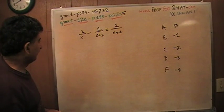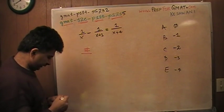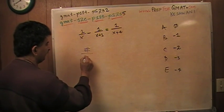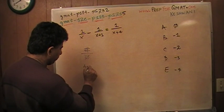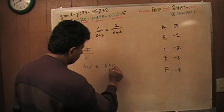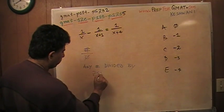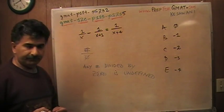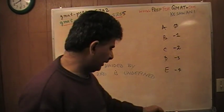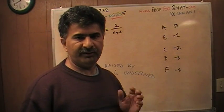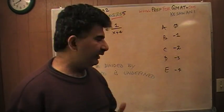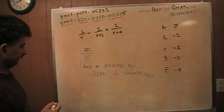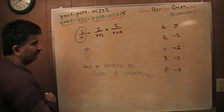The very first thing you have to realize is that if you have a number and divide it by zero, any number divided by zero is undefined. Try it on your calculator — pick any number, divide it by zero, and you will get an error message. It's undefined, it's infinity, it's not something real, and therefore we cannot deal with it. For example here, if x were zero, this quantity will become undefined, which tells me that x cannot be zero. This answer is wrong.